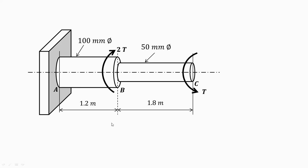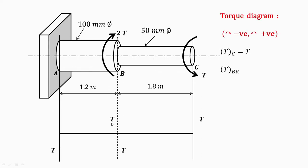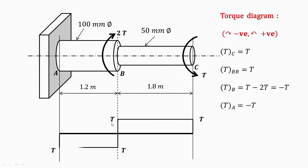So let us first draw the torque diagram and find out various values. We have considered some conventions: clockwise torque is taken as negative and anti-clockwise torque is taken as positive. You can assume any convention. So let us start with point C — at point C we have an anti-clockwise torque, so it is positive and the torque is T.